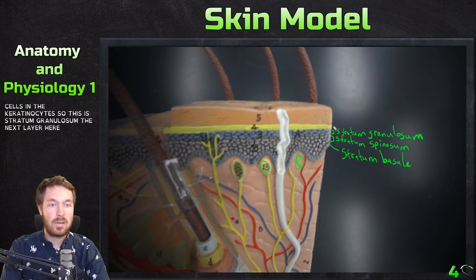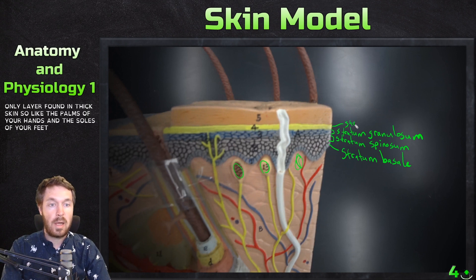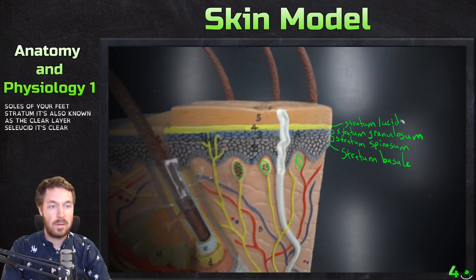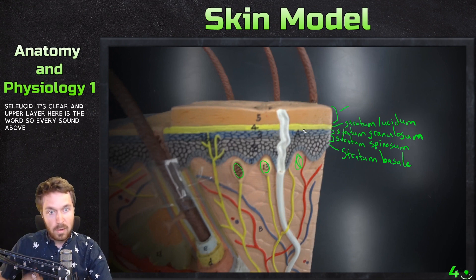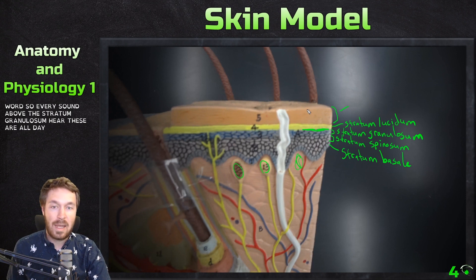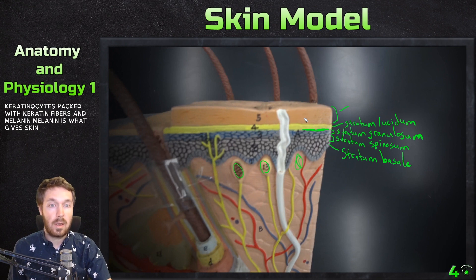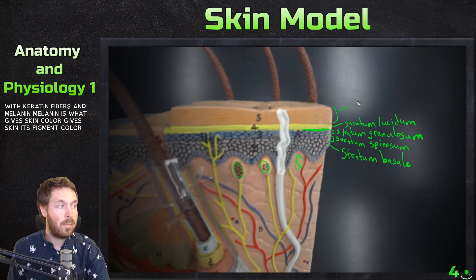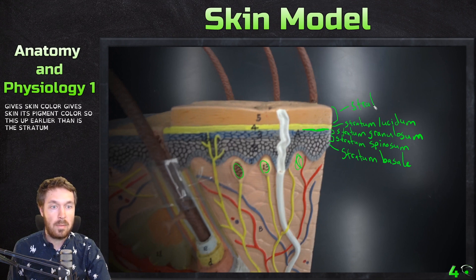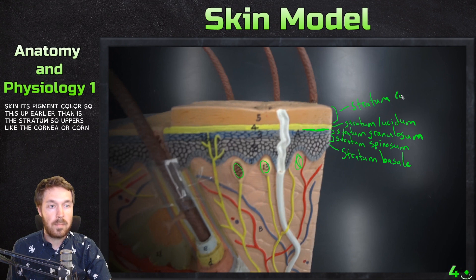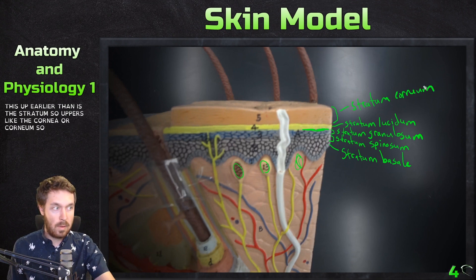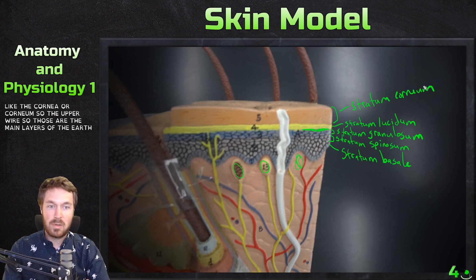The next layer, the stratum lucidum, is only found in thick skin — such as the palms of your hands and soles of your feet. 'Lucidum' refers to the clear layer. The uppermost layer is the stratum corneum, where every cell above the stratum granulosum consists of dead keratinocytes packed with keratin fibers and melanin. Melanin is what gives skin its pigment color.